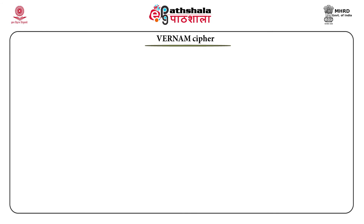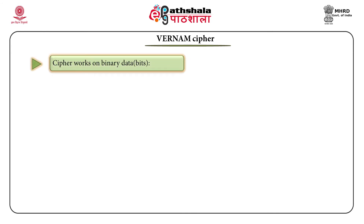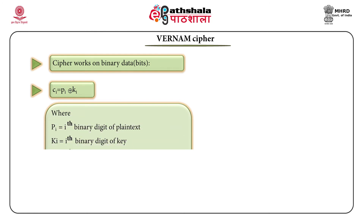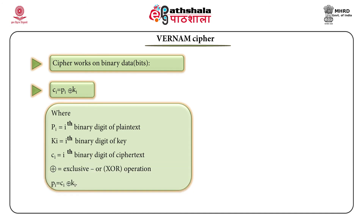Next is the Vernam cipher. The Vernam cipher works on binary data — combinations of 1s and 0s. The ciphertext is achieved by XOR-ing each bit of the plain text with a bit of the key. The exclusive OR operation is used here. Since exclusive OR is the inverse of itself, to get the plain text back from ciphertext, you again do the exclusive OR of the ciphertext and the key.